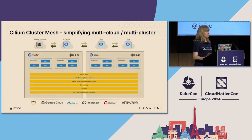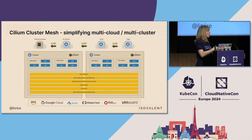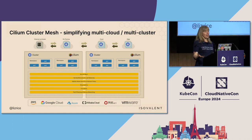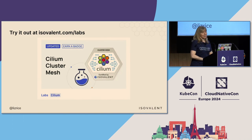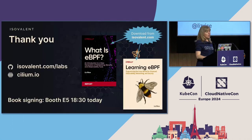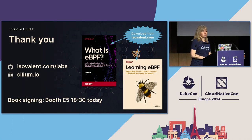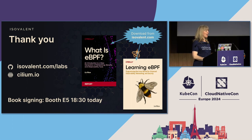I hope that's shown you that Cluster Mesh is pretty straightforward — all you have to do is annotate a service and you can make it available across clusters. You can decide whether to prefer traffic locally or remotely, and you get all of the capabilities of Cilium shared across clusters, which is almost magical. If you want to try it out, there are some great labs on isovalent.com/labs, available for the price of your email address, where you can explore Cluster Mesh without having to set up clusters yourself. You can also come to the Isovalent booth — we've got a number of different labs running there. And this evening at half past six, I'm going to be signing some books if you want to come say hello. Thank you for exploring the galaxy of Cluster Mesh with me today.